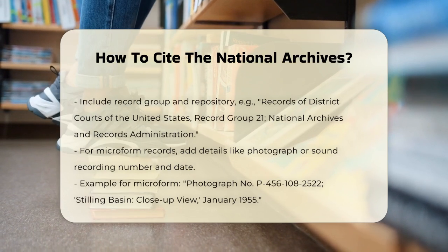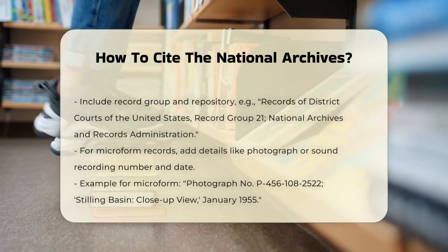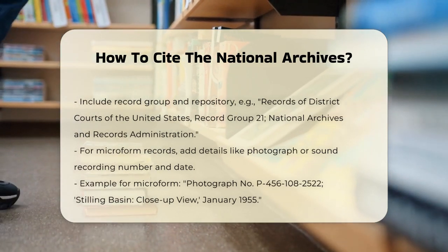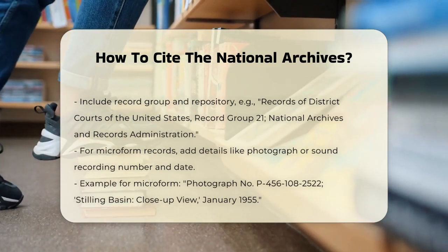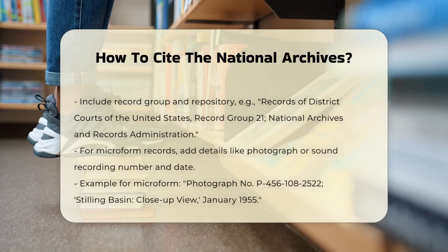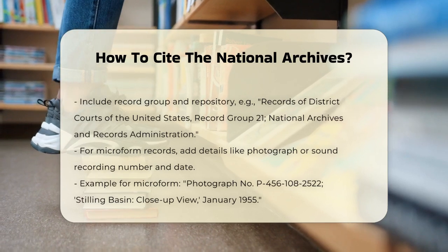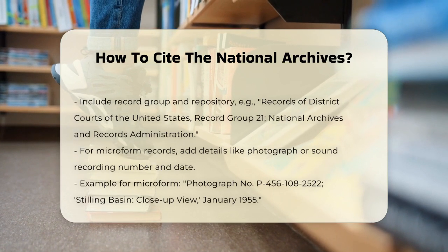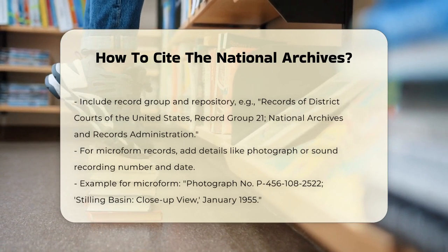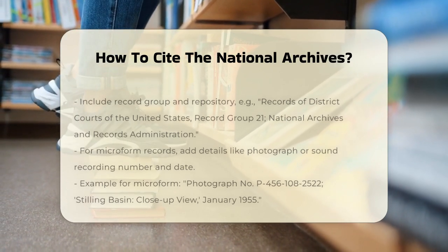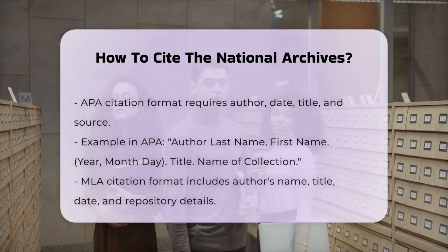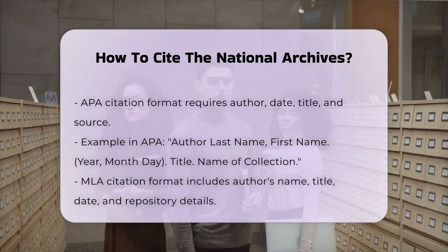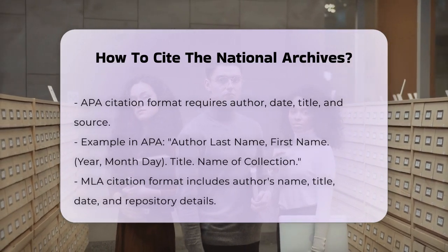If the document is part of a microform record, you'll need to include additional details like the photograph or sound recording number, the title or description of the item, and the date. For example, photograph number P456-108-2522, Stilling Basin, Close-up View of Upstream Area of Stilling Basin Showing Ice Formations, January 1955, Palisades Project, Records of the Bureau of Reclamation, Record Group 115, National Archives and Records Administration, Rocky Mountain Region, Denver.